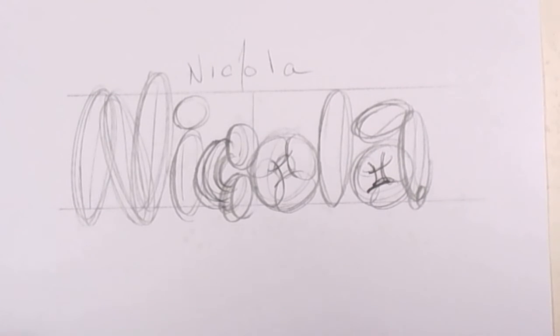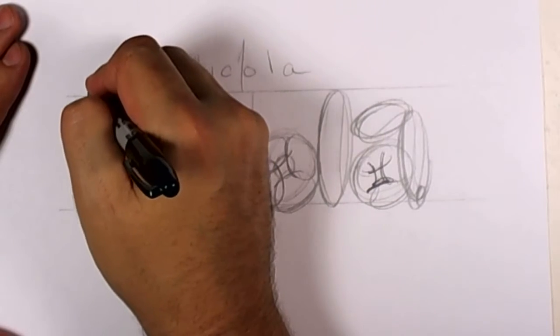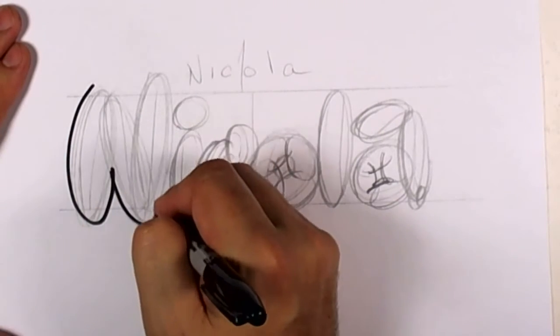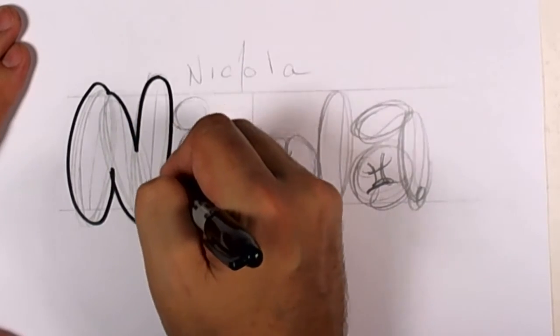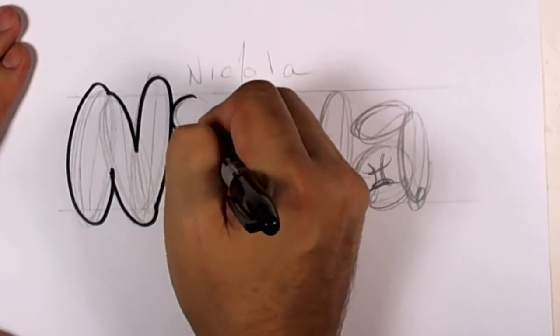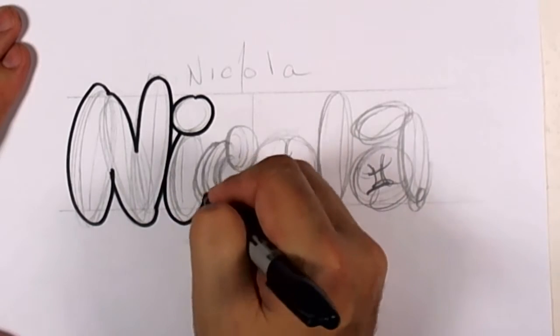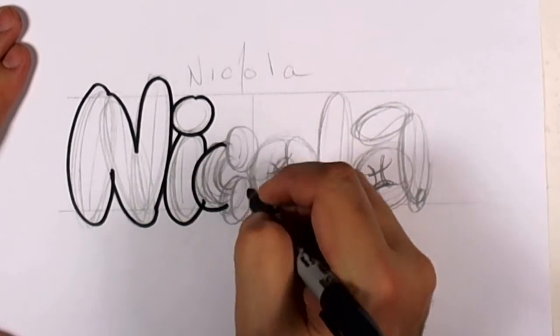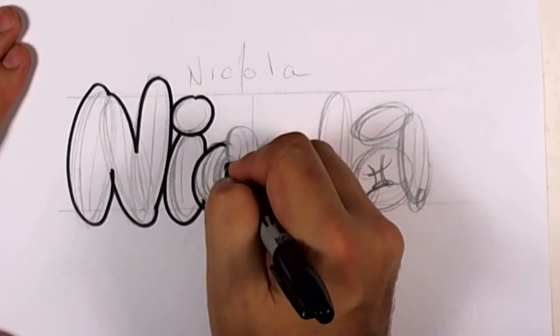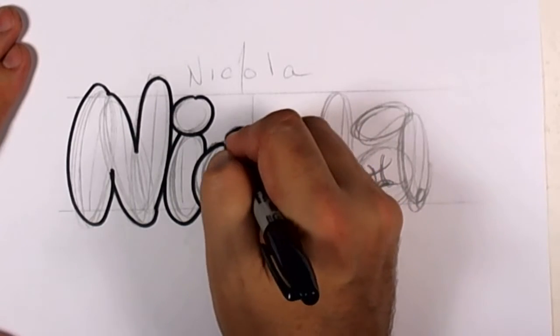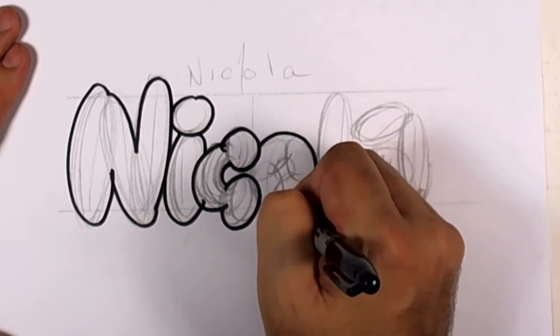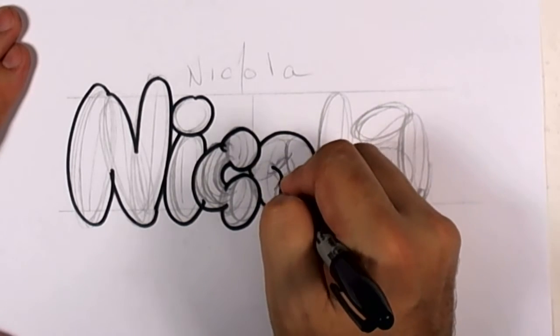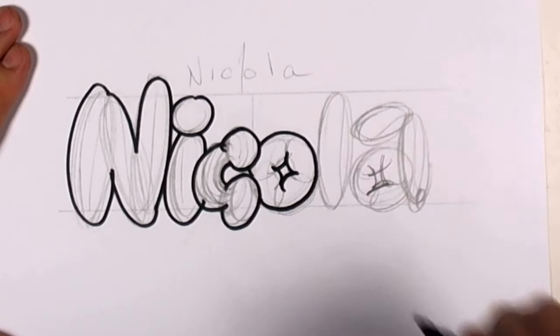All right, now this is pretty simple. You just follow the shape. And you can follow these little bumps, or you can smooth them out. But I like to follow the little bumps. And I'm letting that C overlap there.